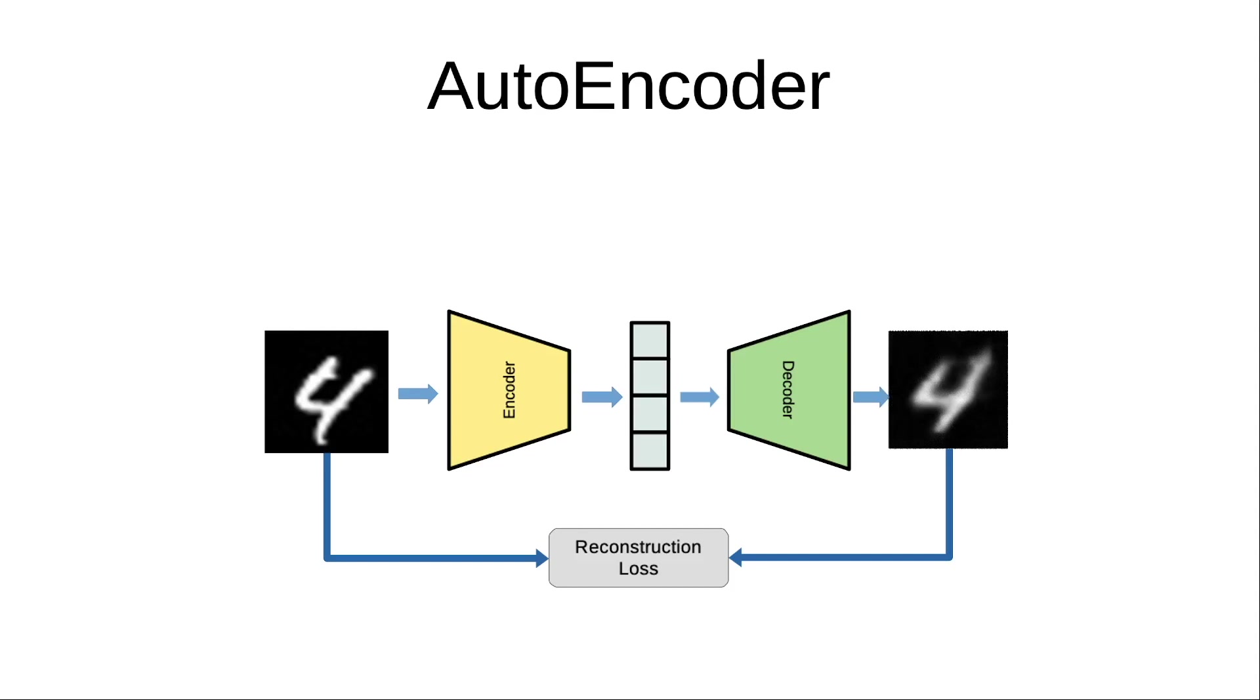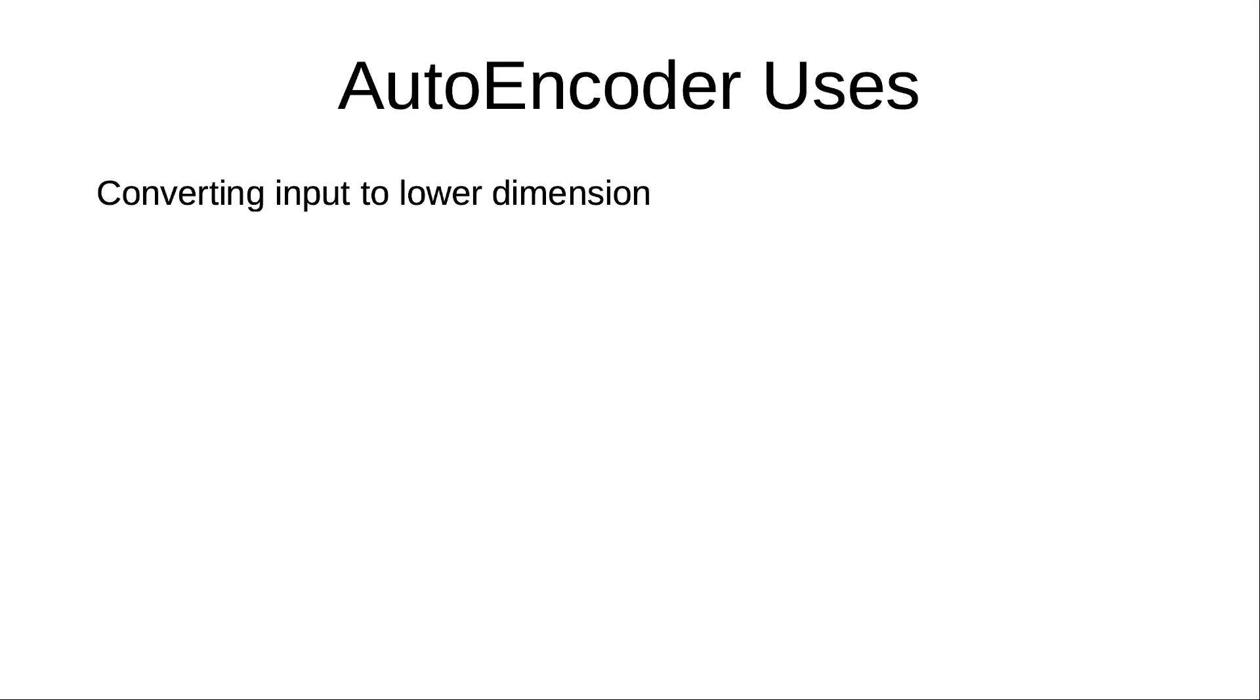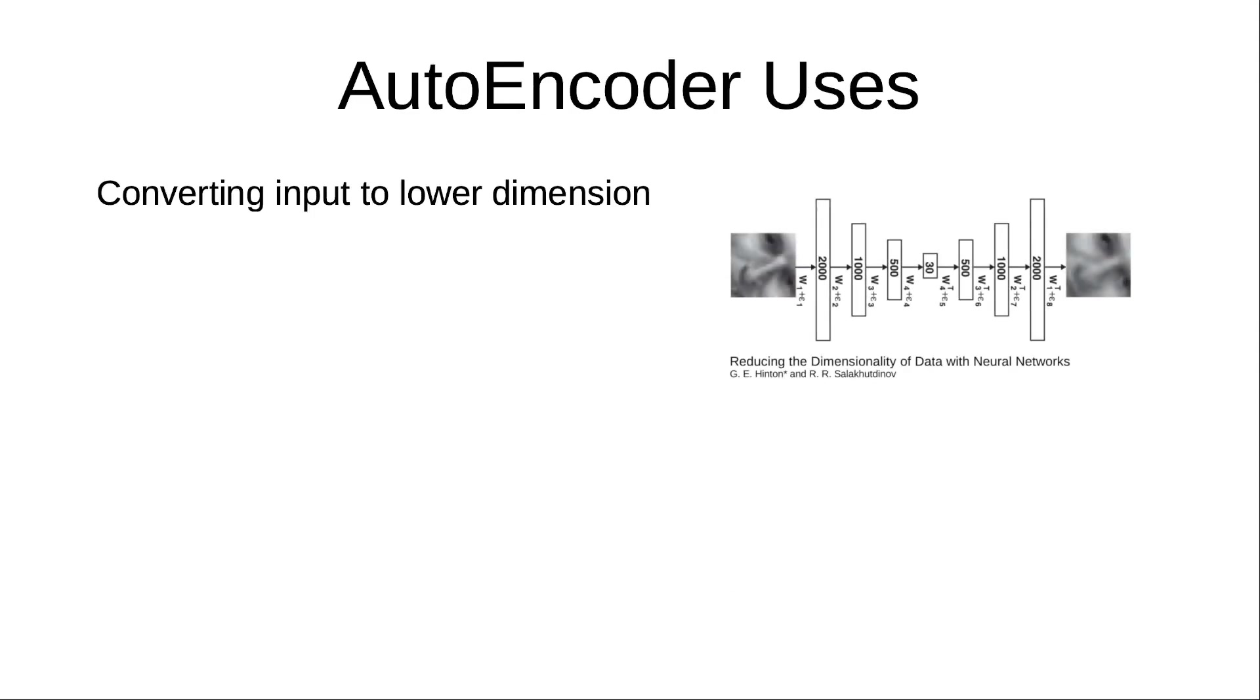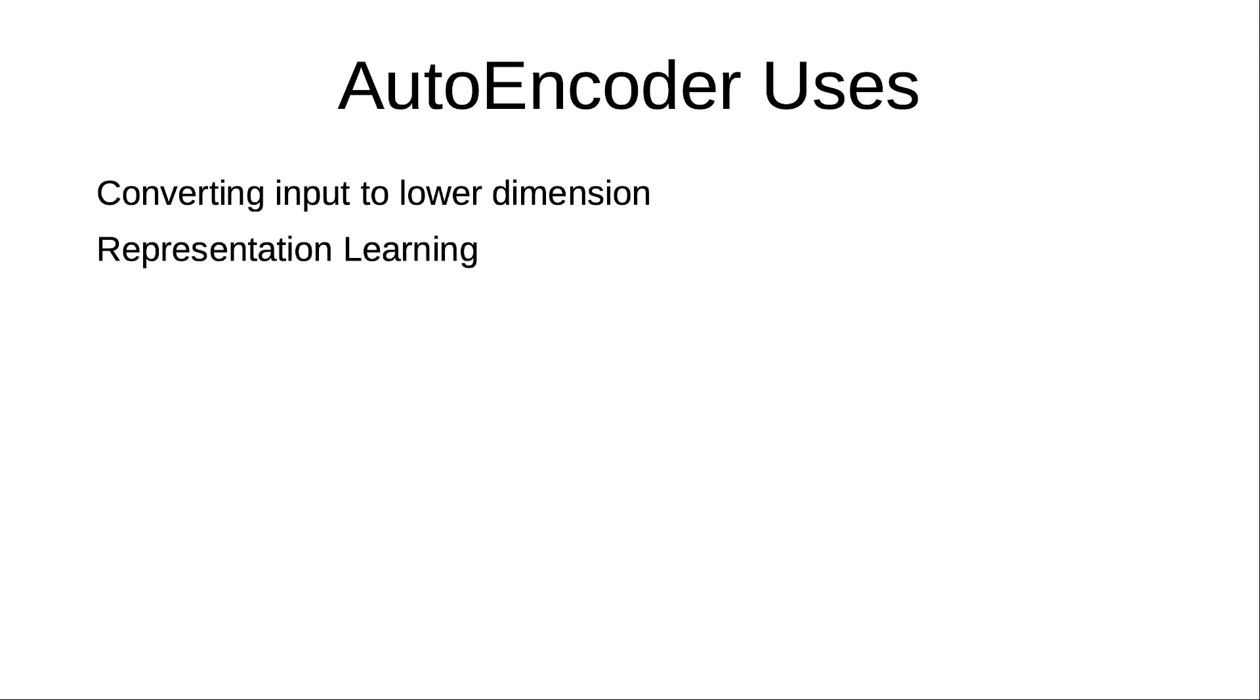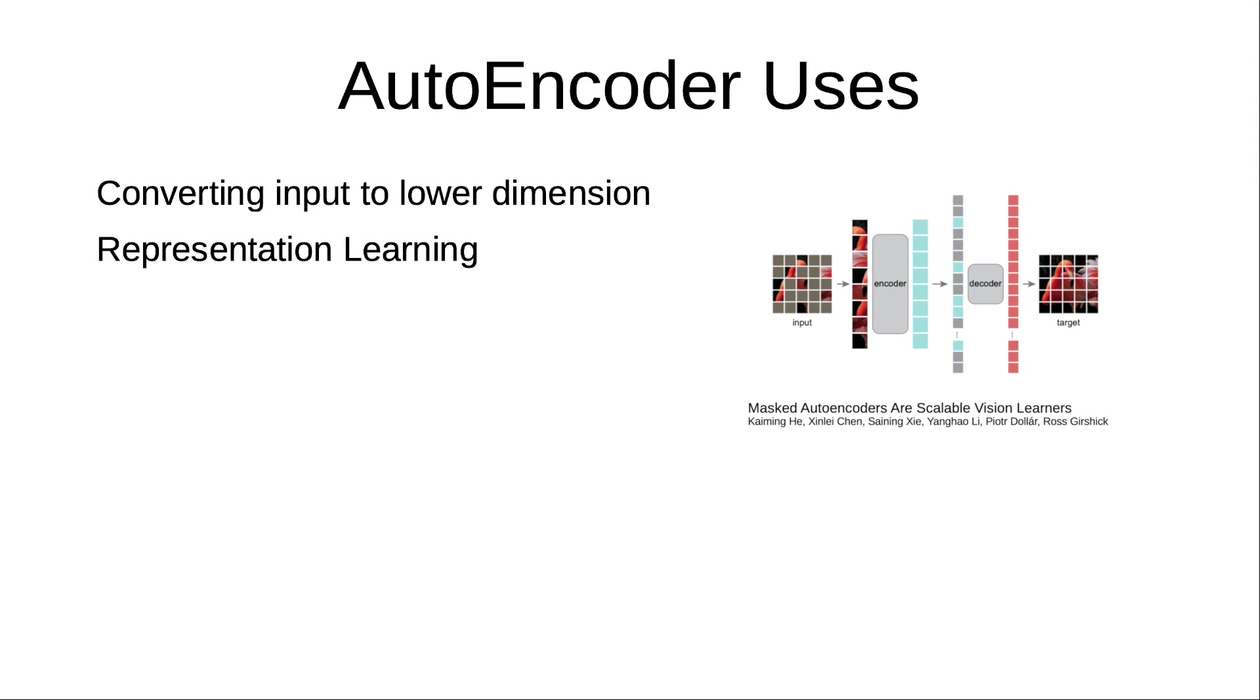Before moving on to variational autoencoder, let's talk about what problems an autoencoder could be used for. We can use autoencoders to convert our input to a lower dimensional latent space and use that as input features for other tasks instead of using the original higher dimensional input. We can also pre-train a network by having it act as an encoder and the reconstruction loss will ensure that the network learns to extract useful features from input. We could then simply throw away the decoder and fine tune the encoder on some downstream tasks.